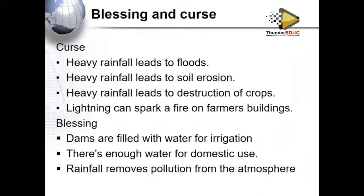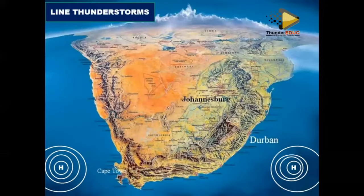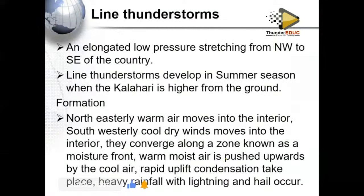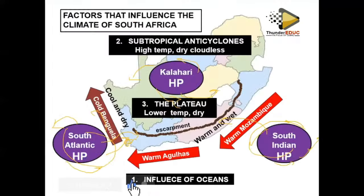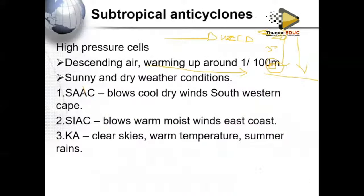Now we also have what we call the line thunderstorm. Before explaining it, understand that the line thunderstorm comes after the moisture front. The Kalahari high pressure system results in cold dry air moving towards the interior, while the South Indian has resulted in moist air — the northeastern trade winds — moving towards the interior. The southwesterly becomes the other wind. Where they move towards the interior there is a point of intersection called the moisture front, and along this line we experience the line thunderstorm.